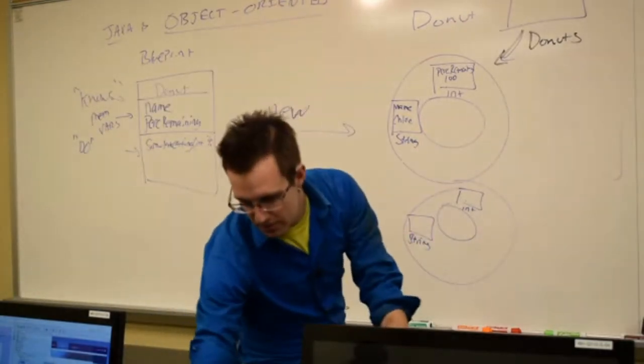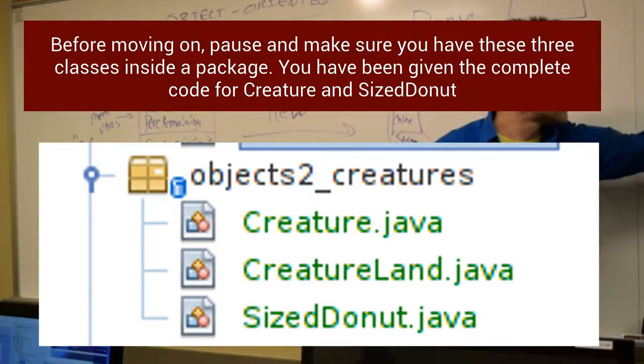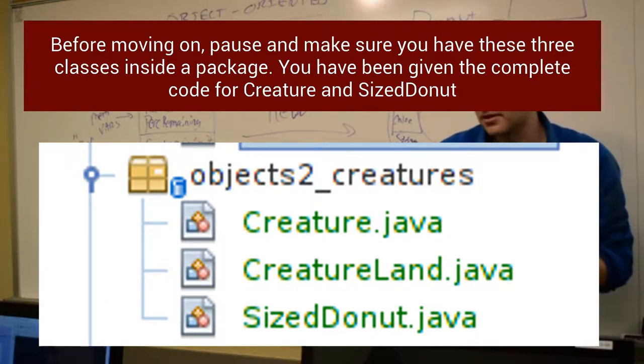So step one is to set up your workspace. And then step two is to code up your creature. And if you finish coding the creature, see if you can write some of the guts